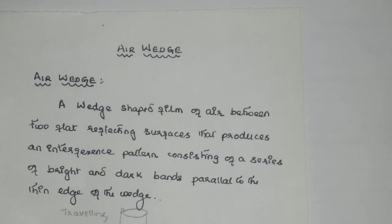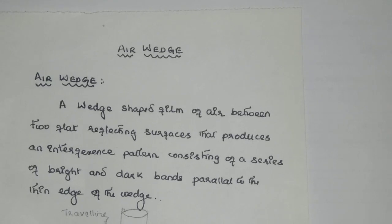This is an experiment for BSC Fourth Semester to determine the thickness of a thin object using an air wedge experiment. An air wedge is a wedge-shaped film of air between two flat reflecting surfaces that produces an interference pattern consisting of a series of bright and dark bands parallel to the thin edge of the wedge.